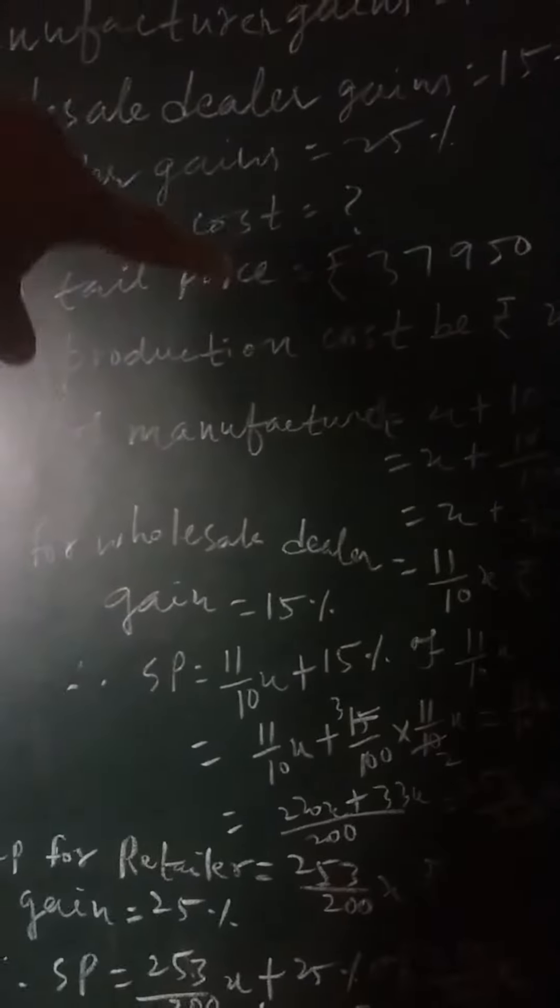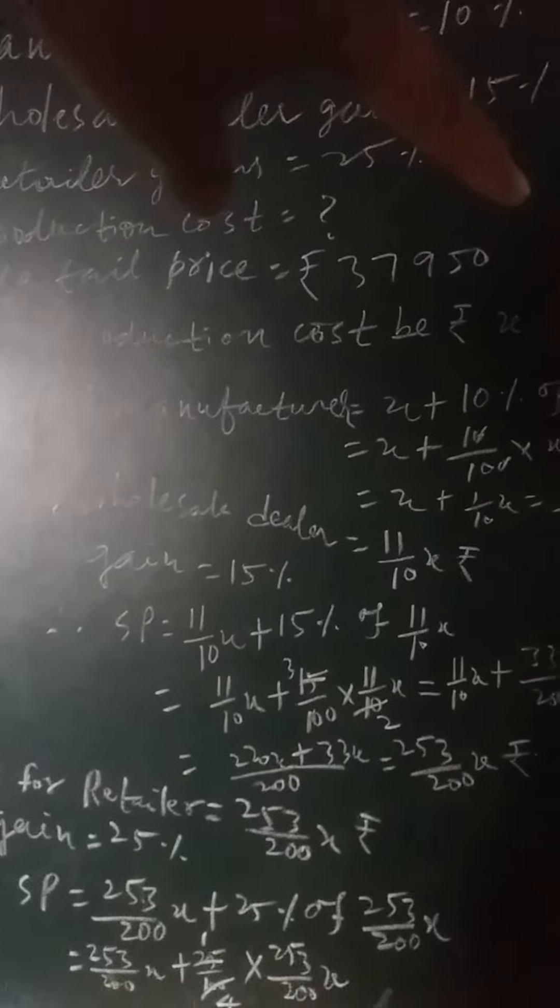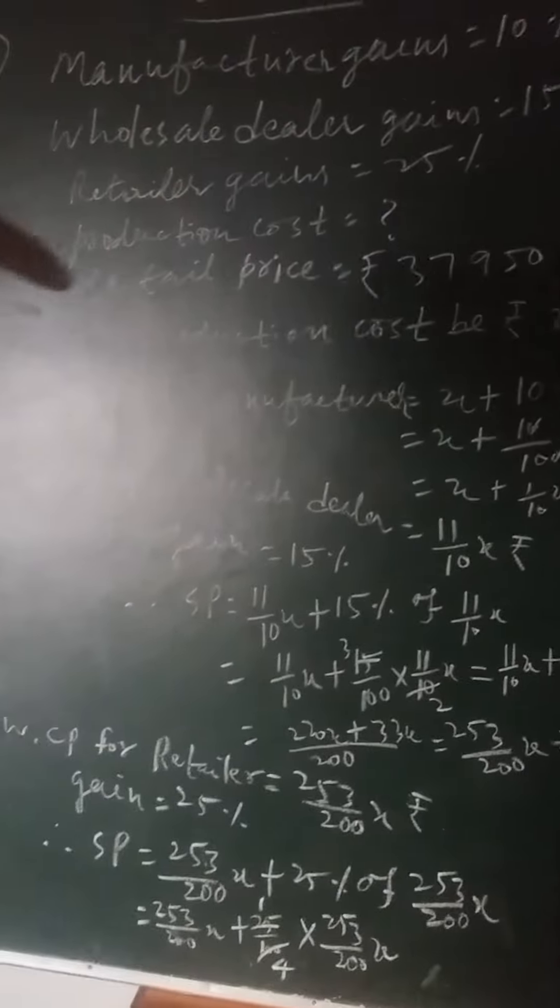Then selling price of manufacturer will be X plus 10% of X, that will be 11 by 10 X rupees.